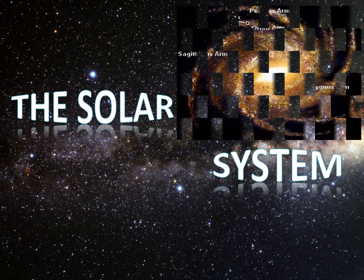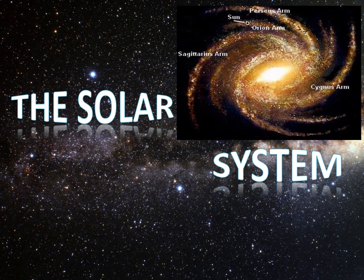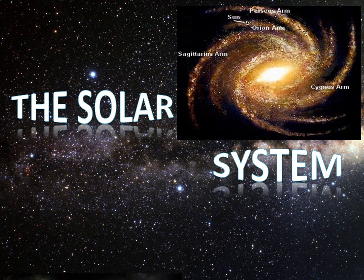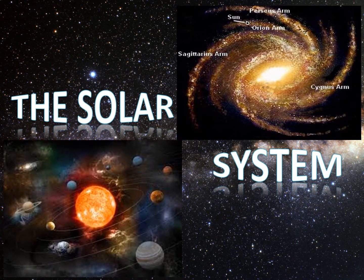The solar system is present in the Orion arm of the Milky Way galaxy. It consists of a central star and the bodies that orbit around it.